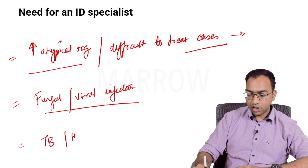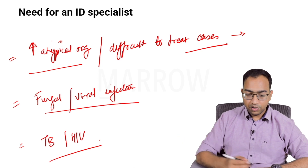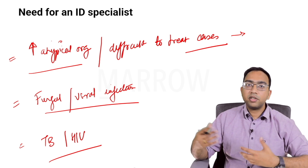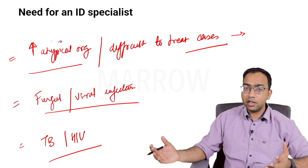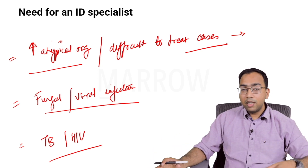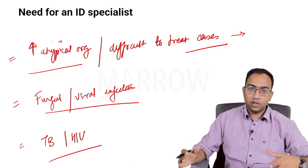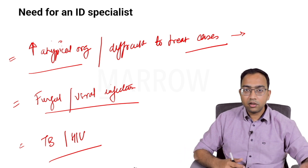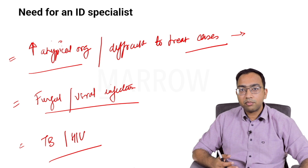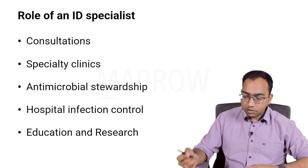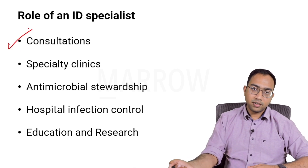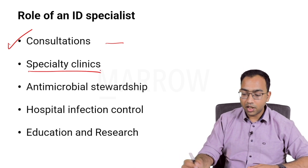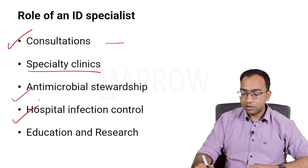Obviously, tuberculosis and HIV are areas where the ID physician plays a key role. It's a very wide-variety branch — not just a superspecialization from medicine, but a subspecialty focusing mainly on infections. Infectious diseases cannot work in isolation; you need knowledge of probably all systems in the body and must work in close association with specialists from other departments to understand your patient better. Services include consultation, inpatient care, specialty clinics, stewardship programs, infection control, education, and research.